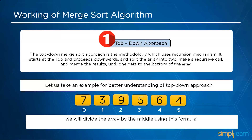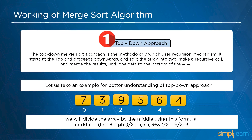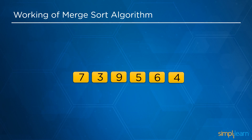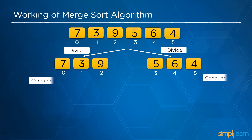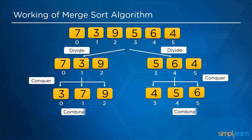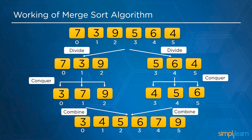For a better understanding of the top-down approach, consider this example on screen. We have an array of size 6 consisting of elements 7, 3, 9, 5, 6 and 4, starting with index 0 and ending with 5. Using the formula middle = (left + right) / 2, we divide the array by its middle, resulting in three elements — 7, 3 and 9 on the left and 5, 6 and 4 on the right.